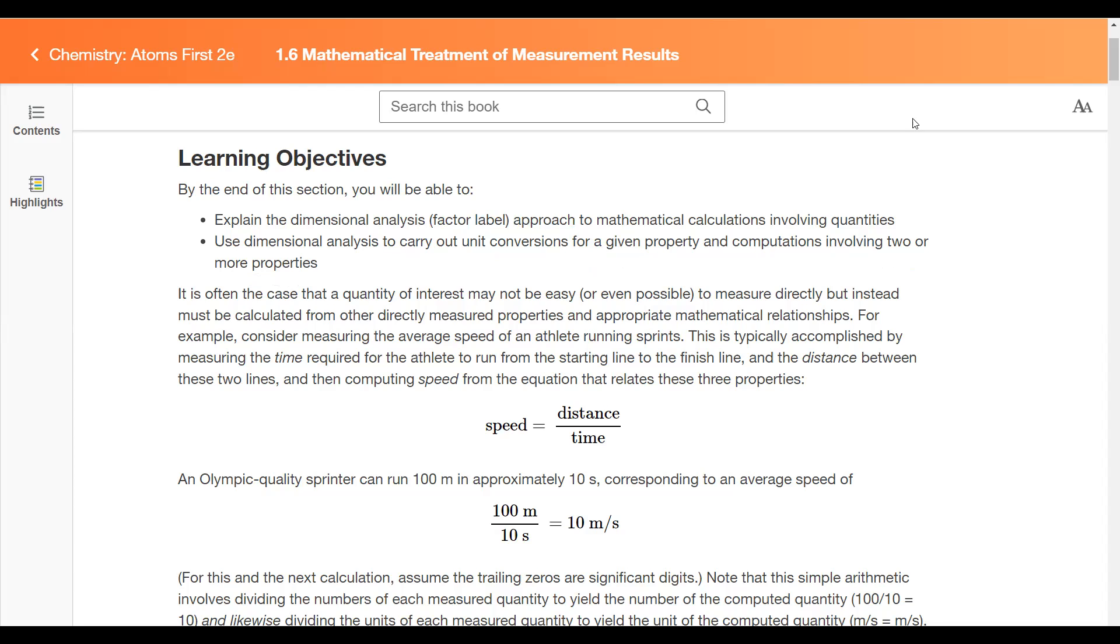The idea here is that whatever mathematical treatment we perform on some quantity, the units are going through that same math. As an example, we've got the formula for speed, which is a measurement of distance per time. If we know the distance, let's say a sprinter runs 100 meters in approximately 10 seconds, we can plug that in: 100 meters divided by 10 seconds gives us 10. But look at the units - they are meters divided by second, or meters per second, and so the units went through this same division that the quantities did.